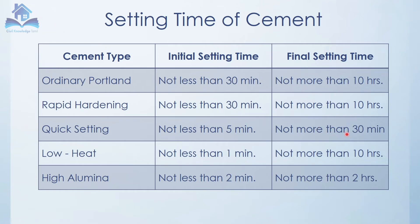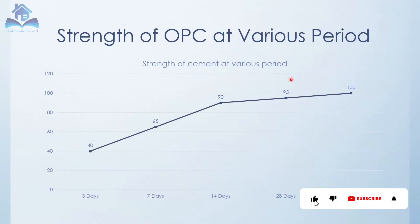For OPC, the initial setting time is 30 minutes and the cement will be set. For Low Heat cement, the initial setting time is similar but the final setting time is 10 hours. For High Alumina cement, the initial setting time is 2 minutes and the final setting time is 2 hours. So this is the normal cement setting time comparison.